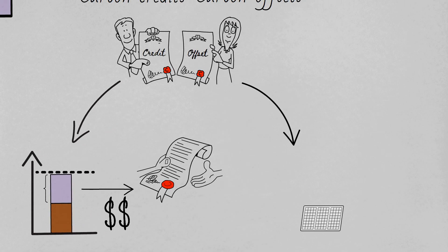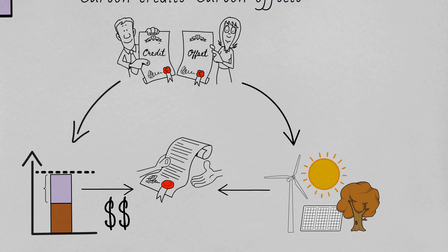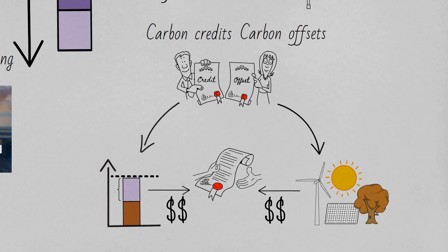Carbon offsets represent operations that reduce the amount of carbon in the atmosphere. So these carbon credits and carbon offsets can be bought and sold in some markets. So another way to achieve carbon neutrality is for a company to simply buy carbon credits or offsets to compensate for the carbon the activity produces.